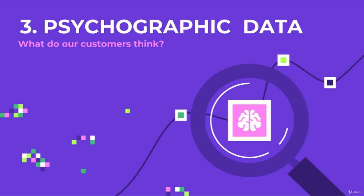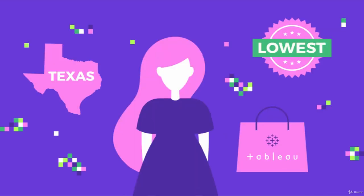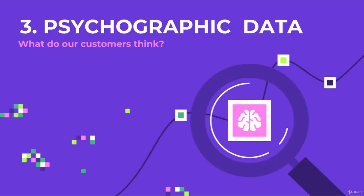The third data point is psychographic data, and this gets into the why. A lot of times this data source is survey data. Of those people who are buying your product, you send them a survey and they answer questions about why they're buying your product — their purchase behavior, likes, and preferences. An example of the type of insight you can get from psychographic data is that maybe these women in Texas are buying your handbags because they care about price and your handbag is the lowest price. So if the reason they're buying your handbag is low price, that should be front and center in a lot of your marketing campaigns for that specific item.